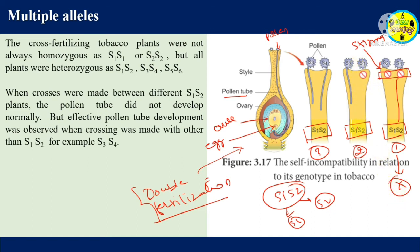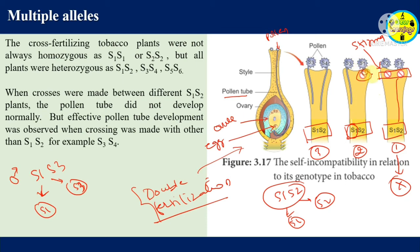Condition two: the stigma is S1S2, but the pollen is from a plant that is S1S3. Through meiosis, that plant produces pollen carrying either S1 or S3. The pollen carrying S1 is blocked because S1 already exists in the stigma — there's genetic similarity. But the pollen carrying S3 is a new combination, so the stigma allows germination of S3 pollen.